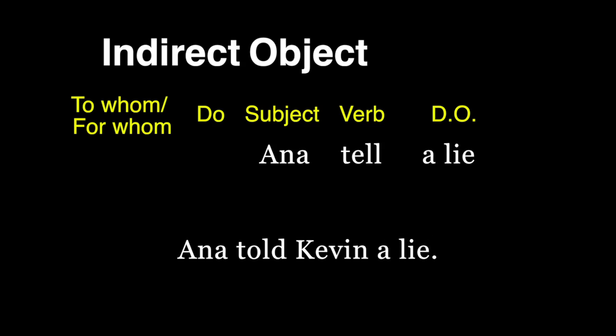Now, let's form the second question with to whom. To whom did Anna tell a lie? To Kevin. Kevin is the indirect object of the sentence.